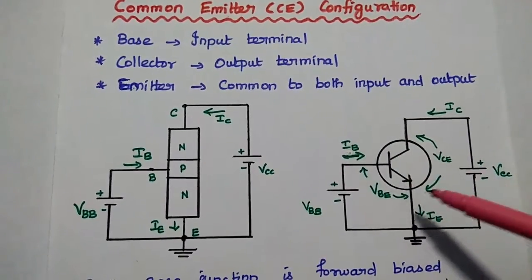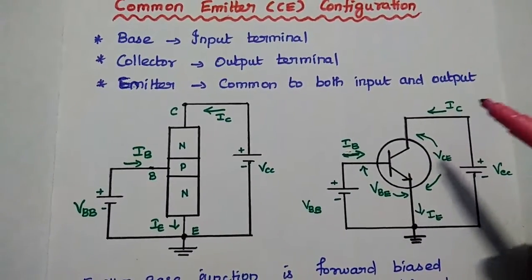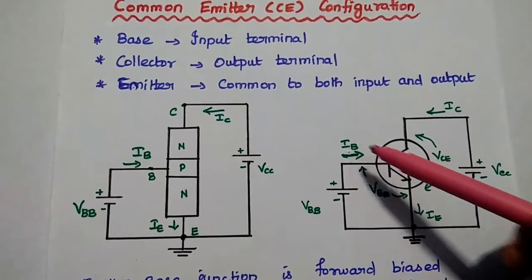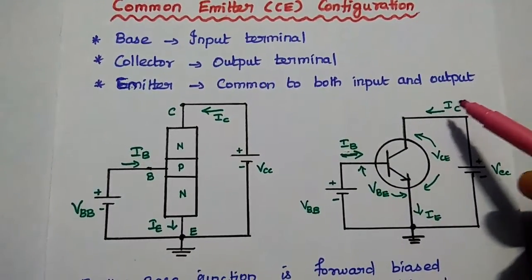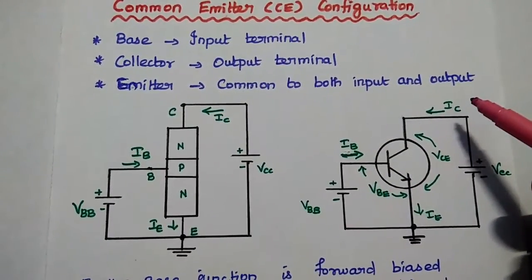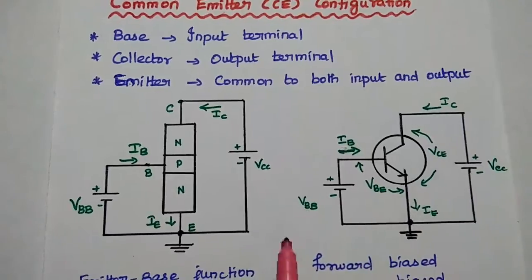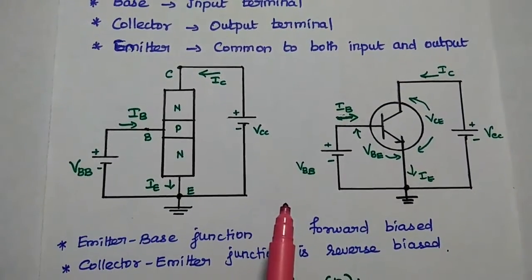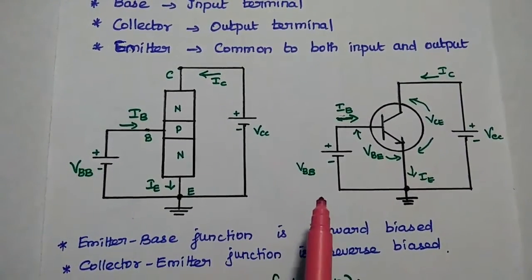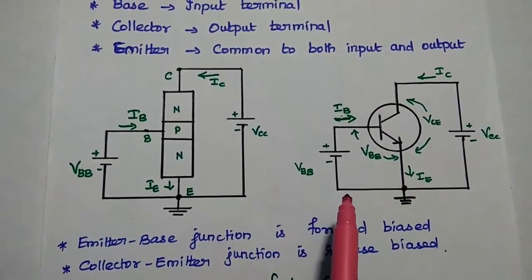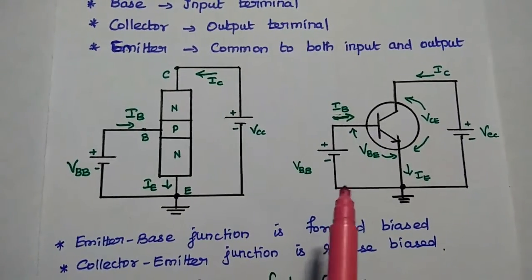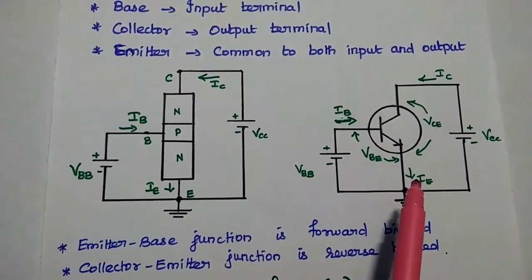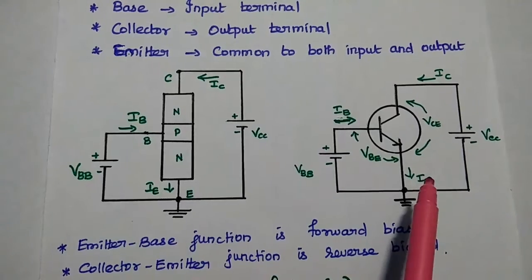You have to remember these four important parameters. Input parameters are IB and VBE; output parameters are IC and VCE. In order to make the transistor work at the desired Q point, we have to ensure that the input is forward biased and the output side is reverse biased.